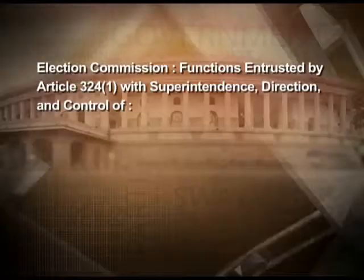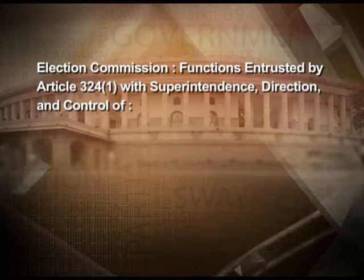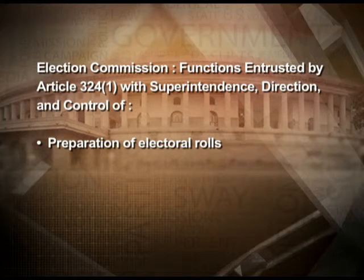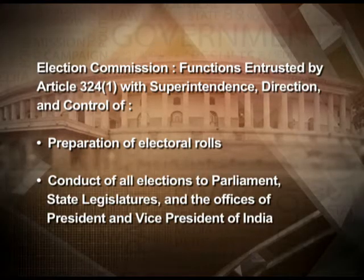The election commission is a constitutional body laid down in Article 324 clause 1. It is entrusted with the superintendence, direction, and control of two things: first, the preparation of electoral rolls — a single electoral roll is prepared for Lok Sabha and Vidhan Sabha elections — and second, the actual conduct of elections to parliament, state legislatures, and to the offices of president and vice president of India, but not to the local bodies.